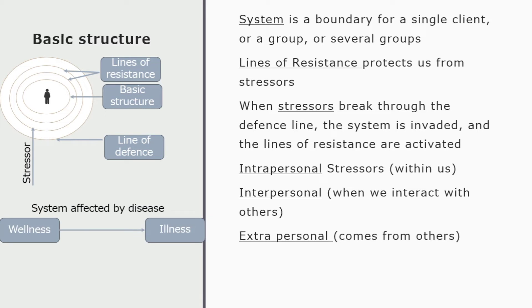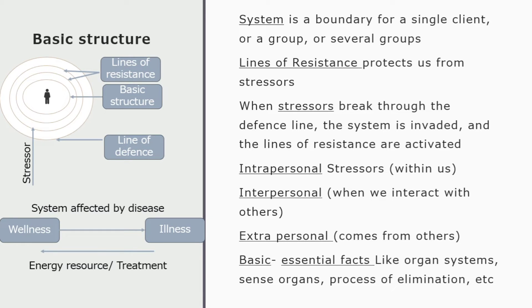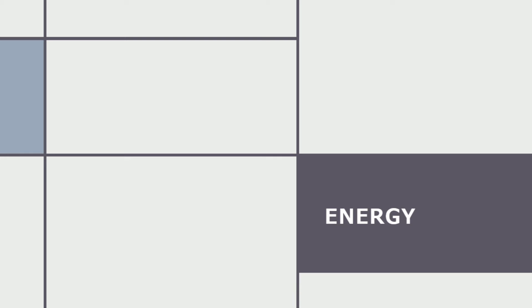The system moves from a state of wellness to illness. As soon as we are affected by a disease, it has crossed our line of defense. If we have adequate energy available, we can restore our defense line and return our system to a state of wellness. The basic or core structure refers to fundamental, essential factors present in all human beings — like organ systems, sense organs, and processes of elimination.